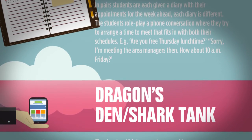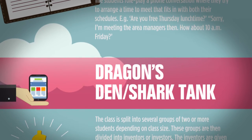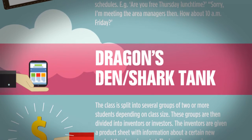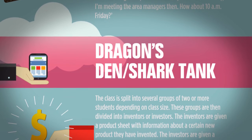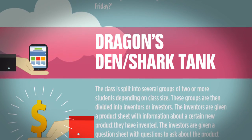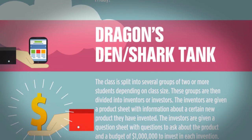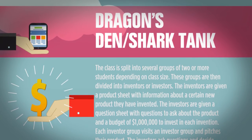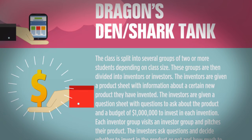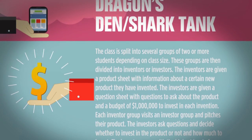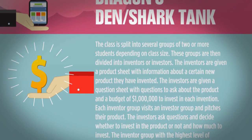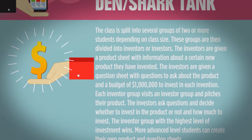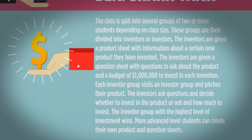Dragon's Den / Shark Tank. The class is split into several groups of two or more students, depending on class size. These groups are then divided into inventors or investors. The inventors are given a product sheet with information about a new product they have invented. The investors are given a question sheet and a budget of 1 million US dollars to invest in each invention. Each inventor group visits an investor group and pitches their product. The investors ask questions and decide whether to invest, and how much. The inventor group with the highest level of investment wins. More advanced students can create their own product and question sheets.